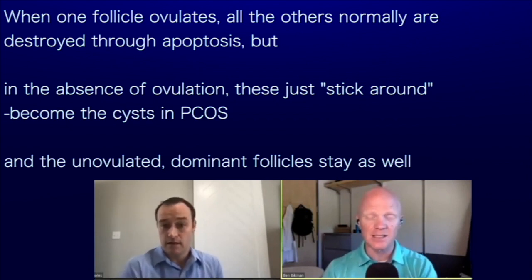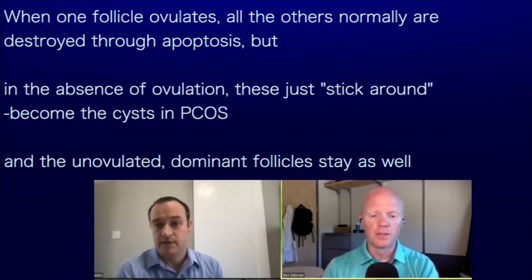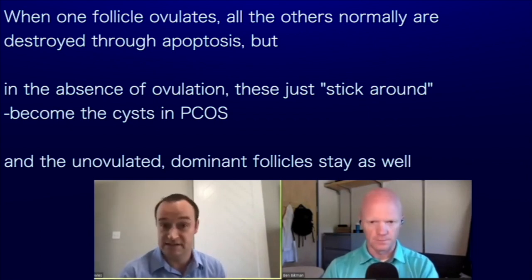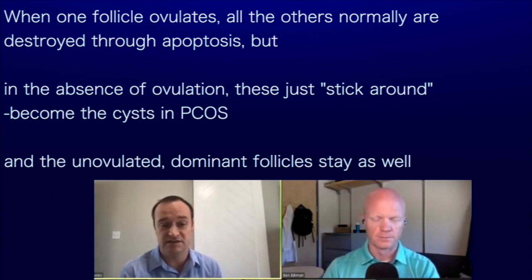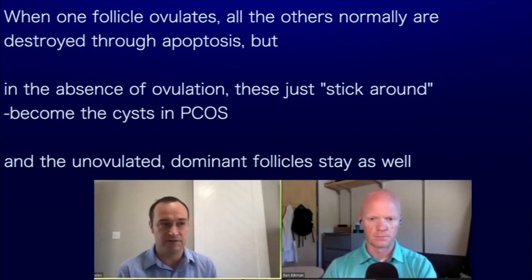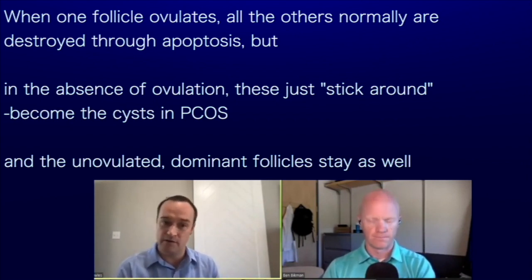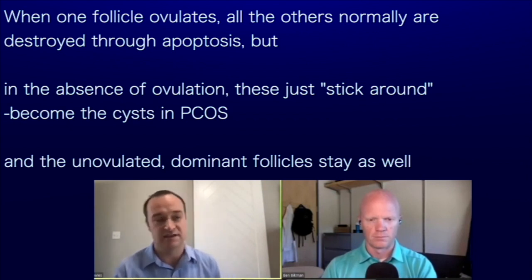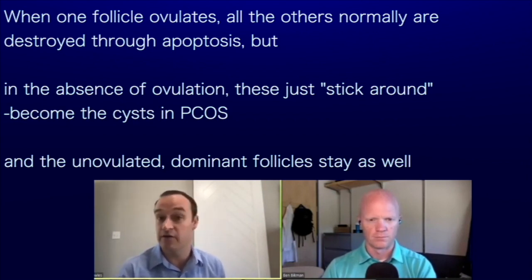When one follicle ovulates, all other follicles are destroyed through apoptosis. But in the absence of ovulation, all the follicles just stick around — they become the cysts that are the prototypical definition of PCOS. Unovulated dominant follicles can also remain; some don't go through apoptosis. Some of these are unovulated dominant follicles; others are follicles that haven't undergone apoptosis.